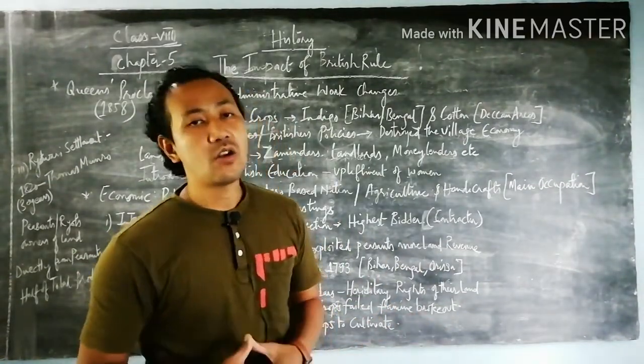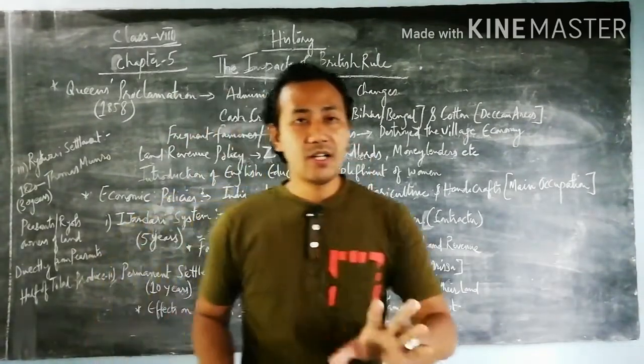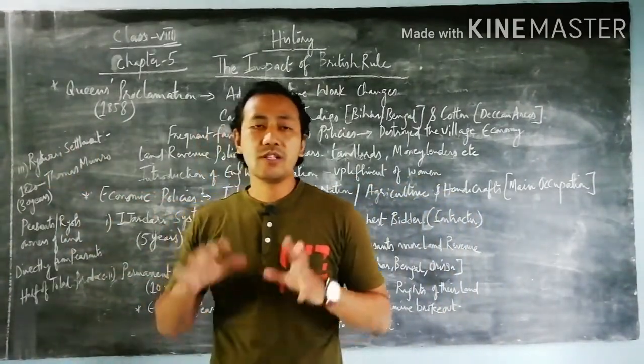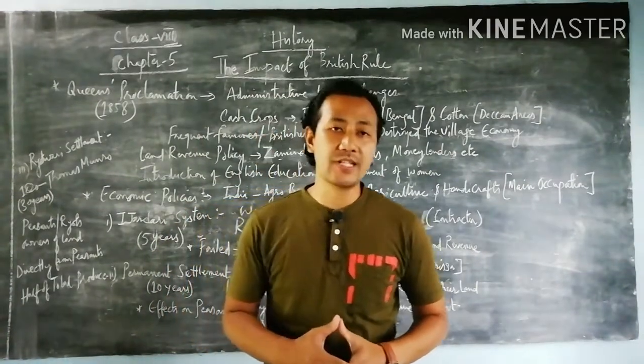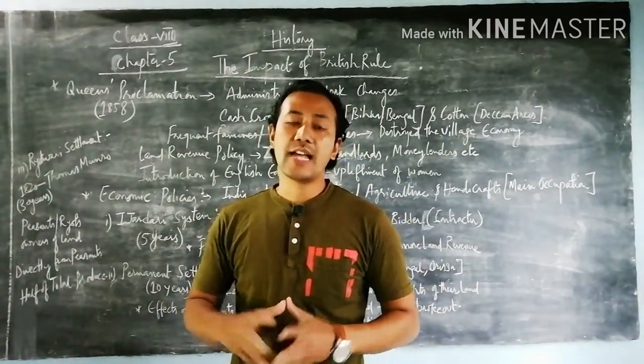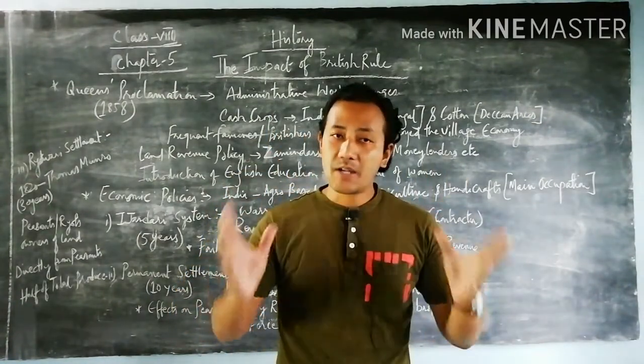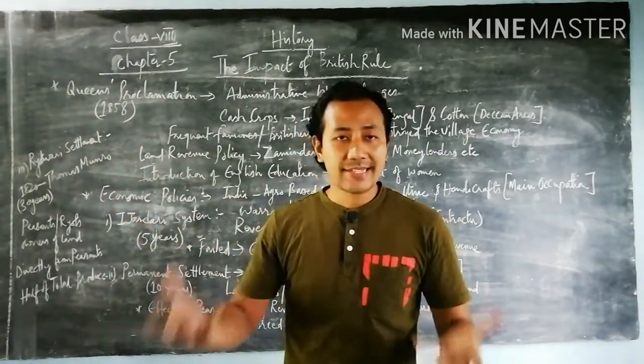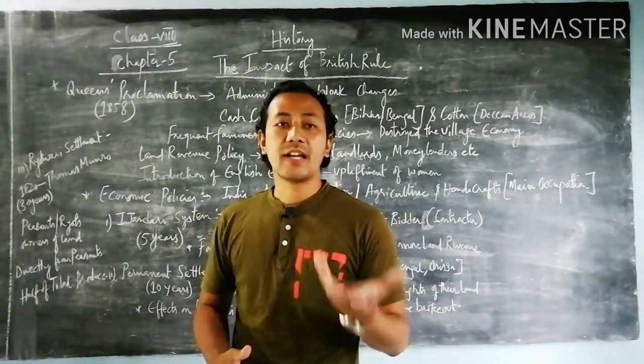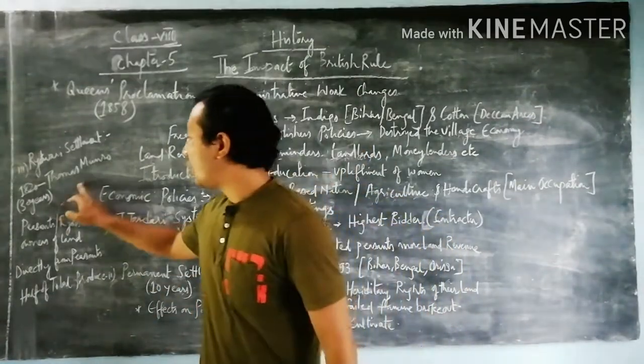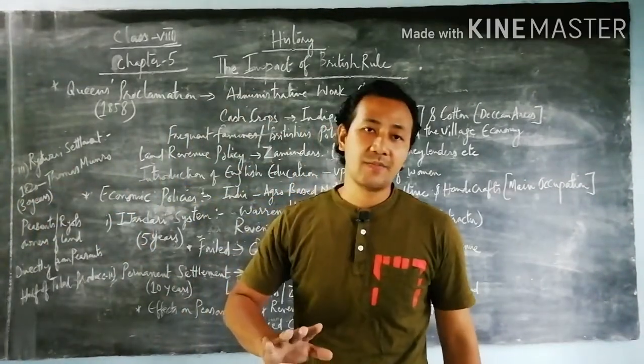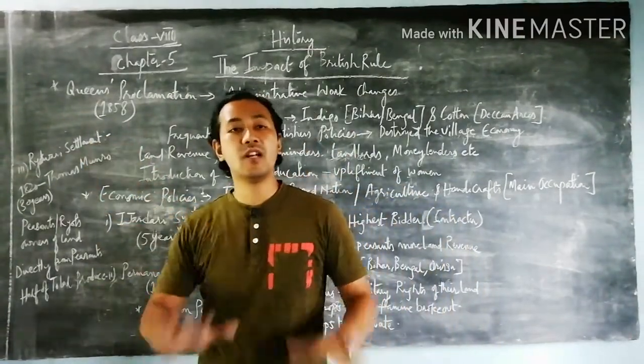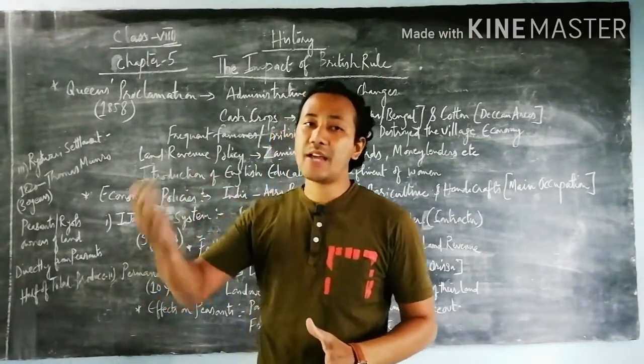The third system used by the British was known as Ryotwari Settlement. In the year 1820, Sir Thomas Munro, who was the main ruler of Madras Presidency (at present Chennai), implemented this system. It was transformed towards Bombay (at present Mumbai, capital of Maharashtra). This system lasted nearly 30 years - Isadari we saw for five years, Permanent Settlement for 10 years, but Ryotwari Settlement was for 30 years.